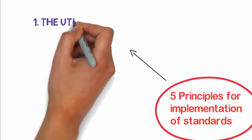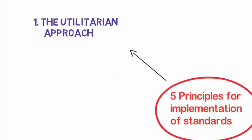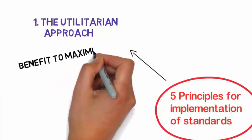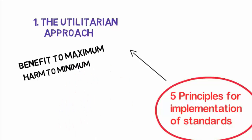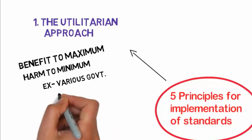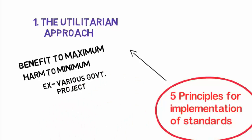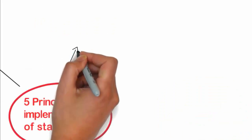The first principle is the utilitarian approach. This is the most practicable and useful approach. In this approach, benefit to the maximum number of individuals and harm to the minimum number of individuals is focused. Even some harm to some individuals is justified. For example, various government projects.